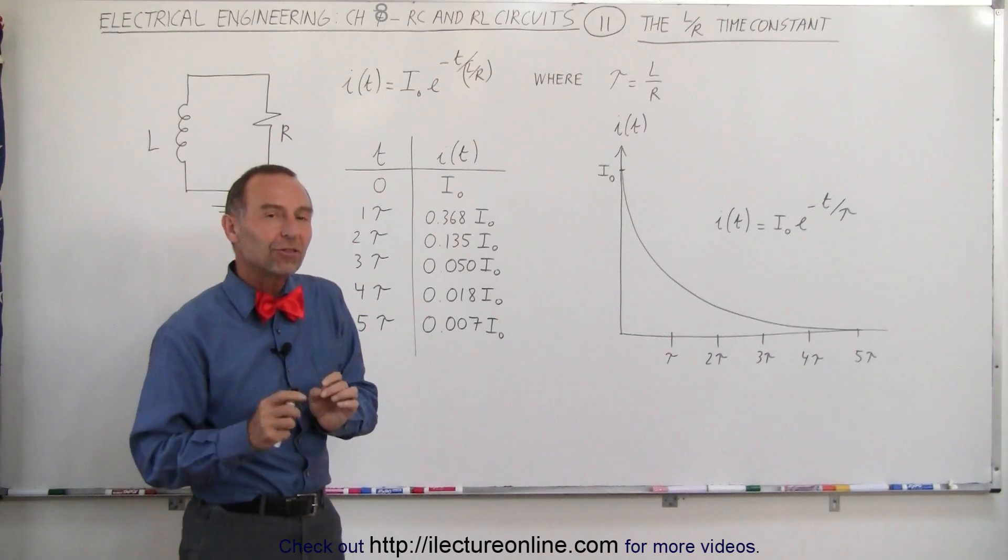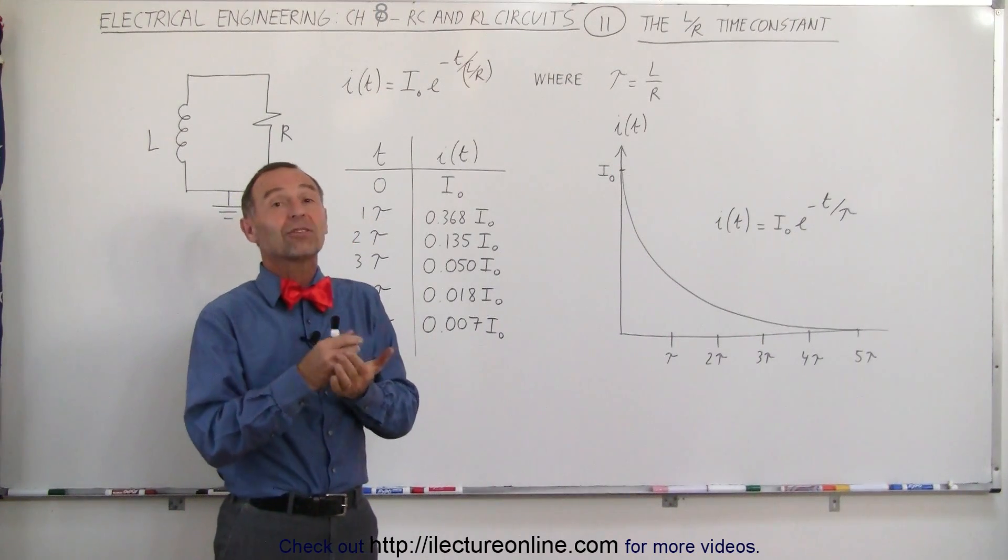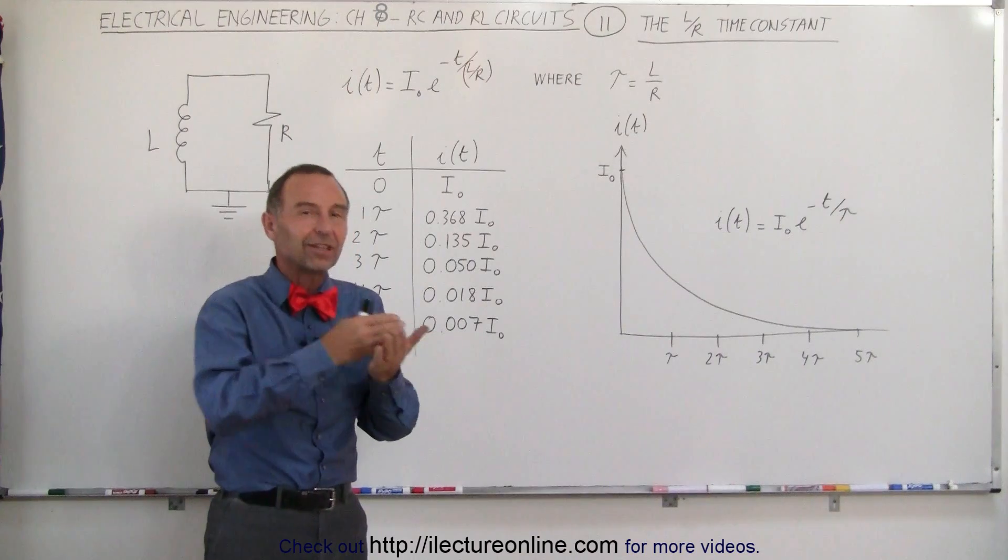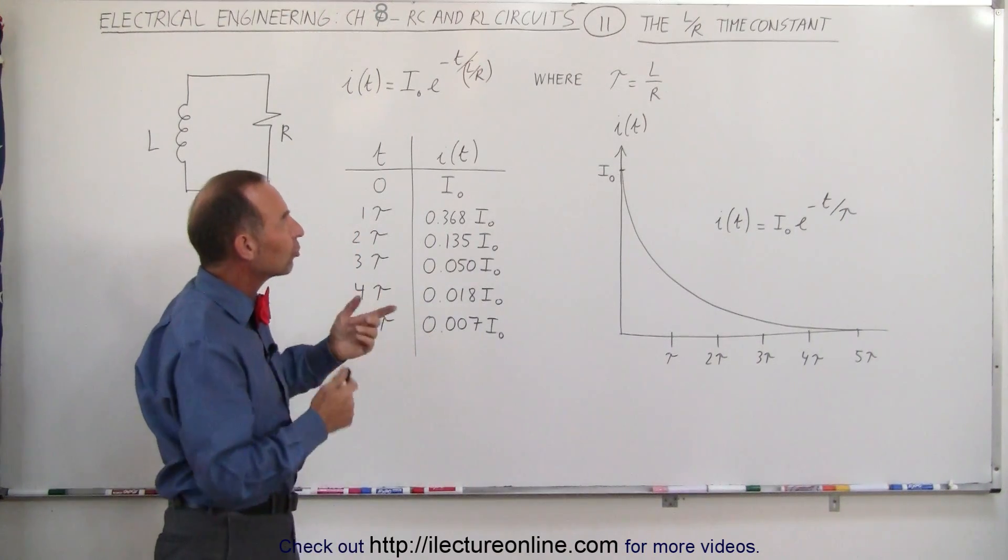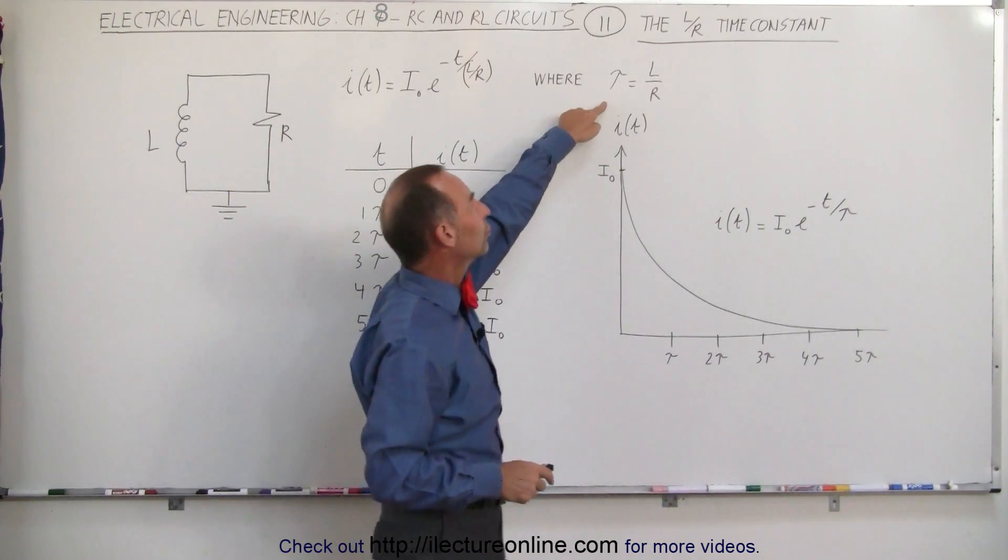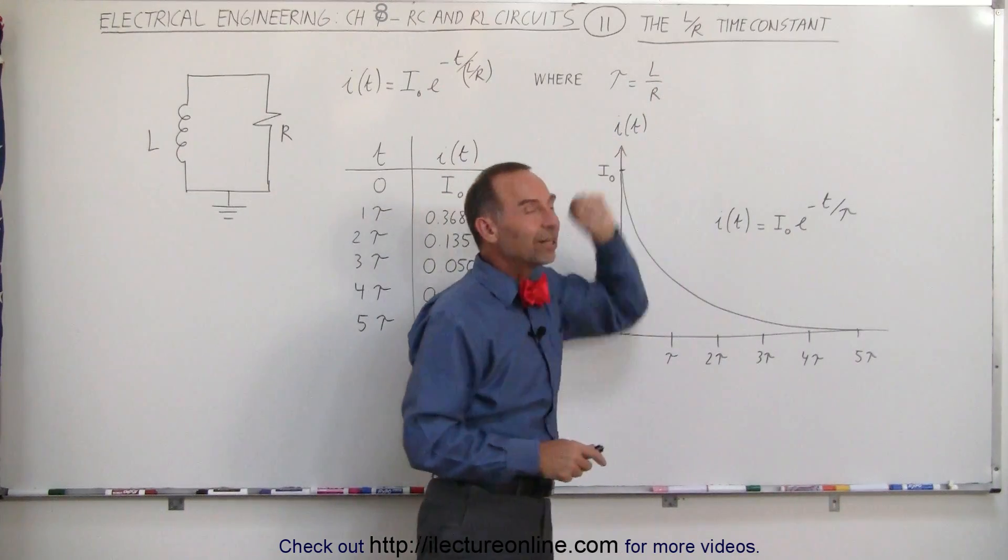There's two time constants in an RC circuit. The time constant is equal to the product of the resistance and the capacitance. With an inductor circuit, the time constant is equal to the inductance divided by the resistance, and that makes sense.